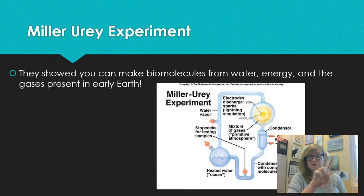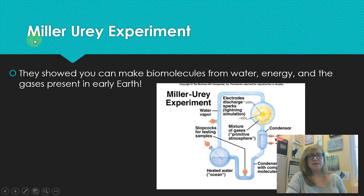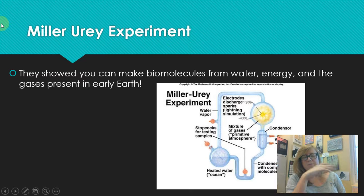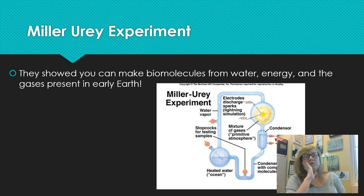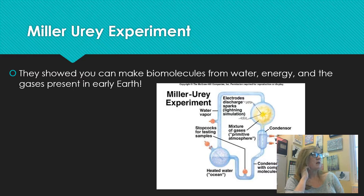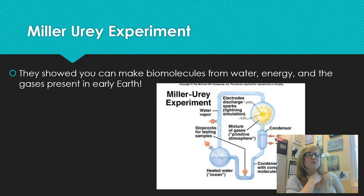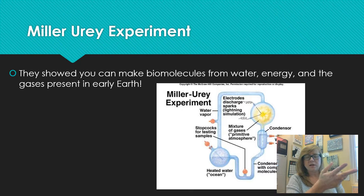I wanted to start by talking about an experiment, but first - Darwin wrote something like, imagine a little warm pond full of water, heat, methane, and different chemicals, and that these chemicals we find in living things kind of change and come together and finally produce life.